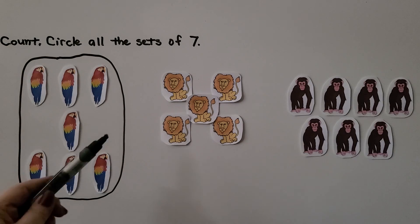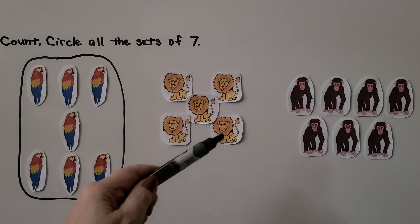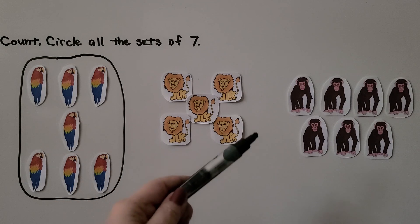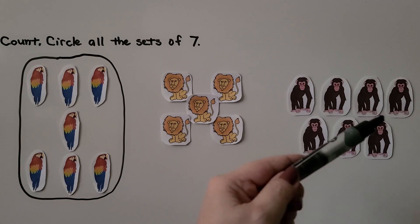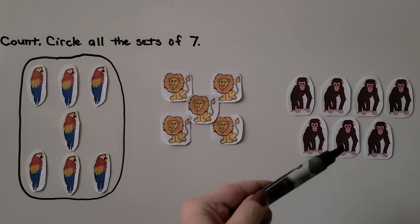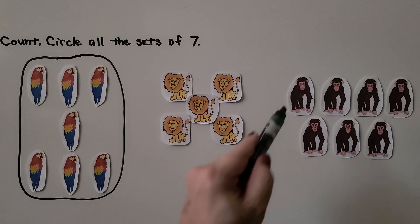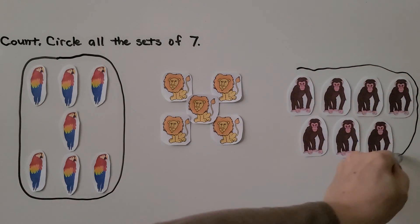Let's count the lions. 1, 2, 3, 4, 5, 6. Now let's count the chimpanzees: 1, 2, 3, 4, 5, 6, 7. There's 7 chimpanzees. We can circle the 7 chimpanzees. That's a set of 7.